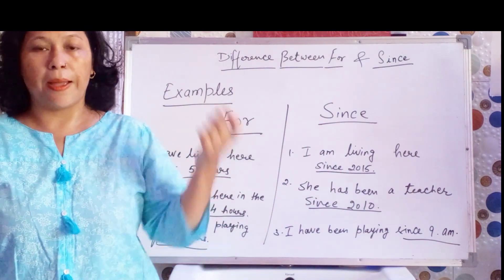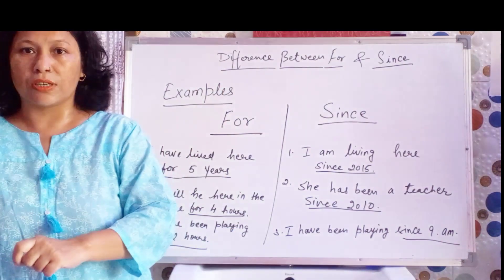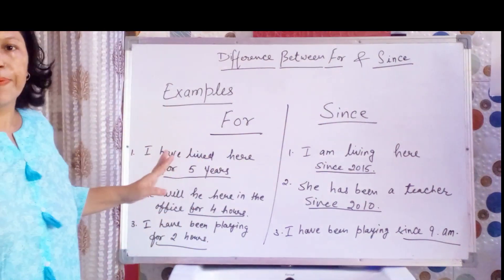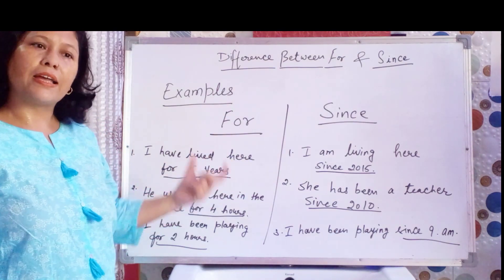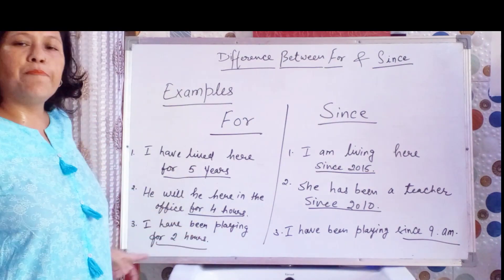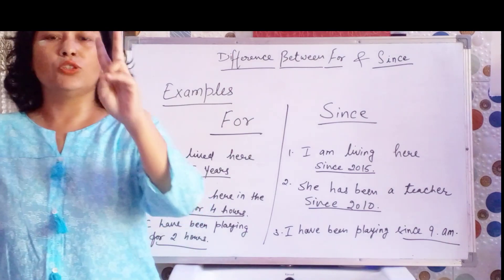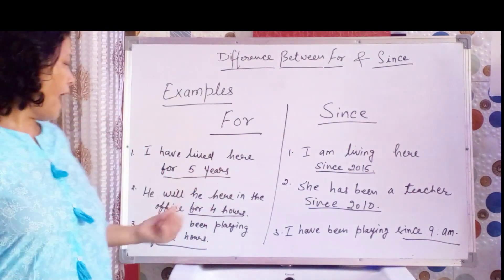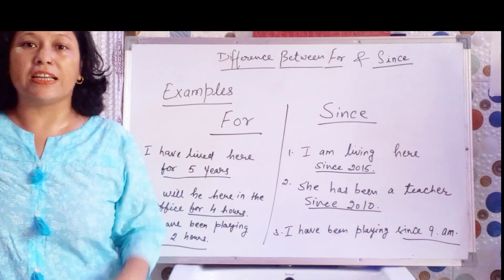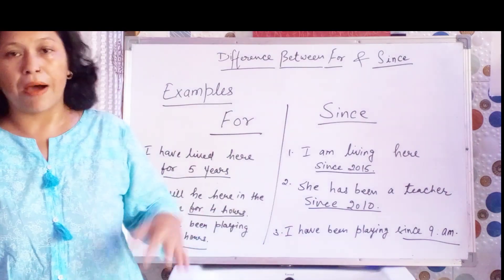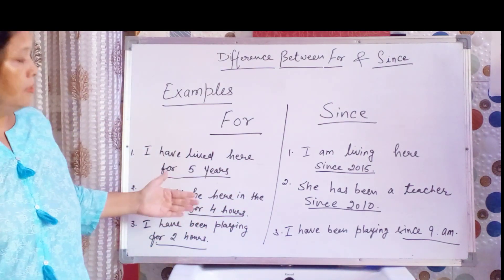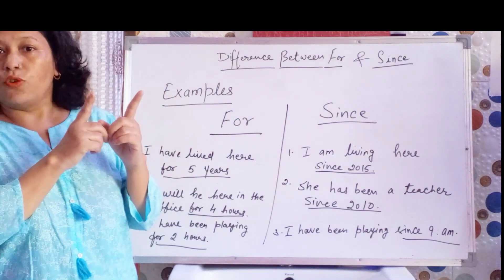Ab woh 4 ghante koi bhi ho sakti hai — 12 bajay se 4 bajay tak ho sakti hai, 8 bajay se 2 bajay tak ho sakti hai. Unhone koi particular time nahi bataya, bas 4 ghante ke liye aayega. 'I have been playing for 2 hours' — main 2 ghante tak khelta raha. Kaun se 2 ghante tha pata nahi, lekin 2 ghante tak khelta raha. Toh yeh period of time dekh liya.